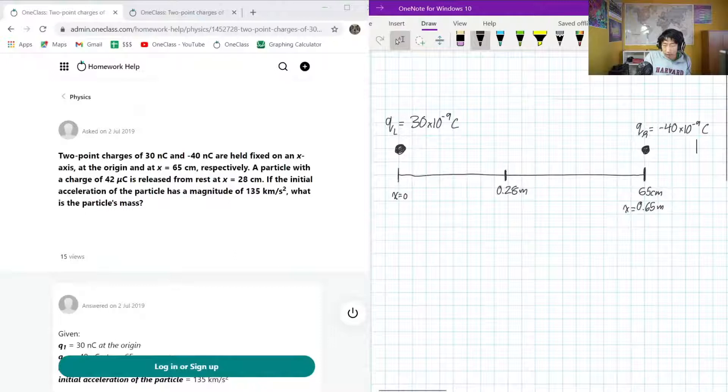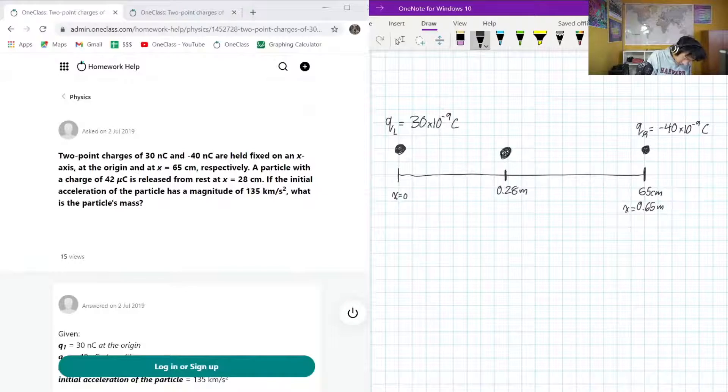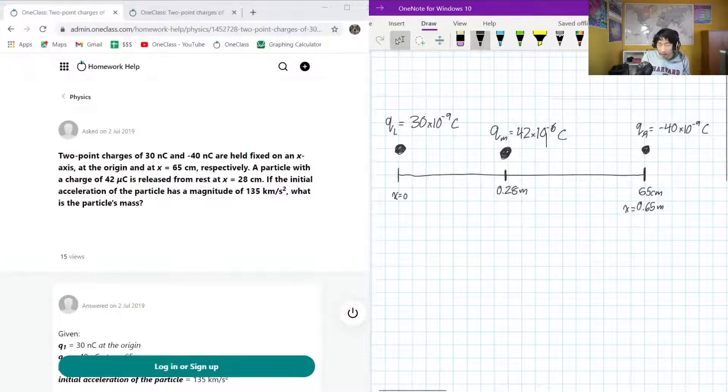And this is negative 40 times 10 to the negative 9 Coulombs. And in the middle, we have a particle. And let's call this QM for Q middle. This is given by the question as 42 times 10 to the negative 6 Coulombs. Okay, the reason I did negative 6 instead of negative 9 for the power is because, well, we have microcoulombs instead of nanocoulombs. Okay, so that's a big difference maker.